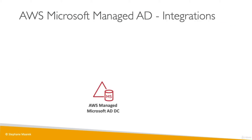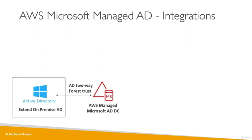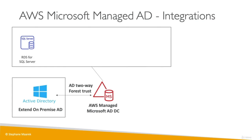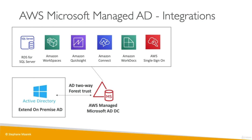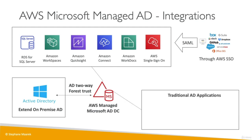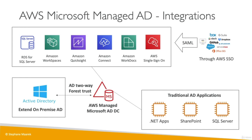Let's look at the integrations in depth. Your Managed Microsoft AD domain controller is in the middle, and it can integrate with your on-premise Active Directory using something called Two-Way Forest Trust. It can also integrate with AWS services — most importantly RDS for SQL Server, but also WorkSpaces, QuickSight, Connect, WorkDocs, and Single Sign-On. With SSO, you get access to SAML business applications such as GitHub, Box, Dropbox, and Office 365. Traditional Active Directory applications like .NET apps, SharePoint, and SQL Server deployed on EC2 instances can also be integrated with that Active Directory managed by AWS.